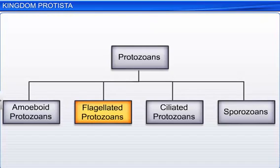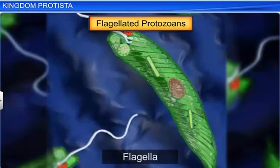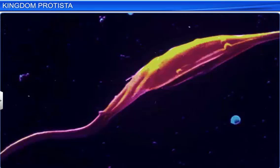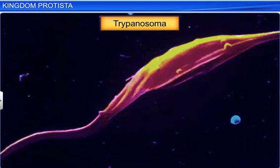Flagellated protozoans, as the name suggests, have flagella. They can be either free living or parasitic. Some parasites, like Trypanosoma, can also cause diseases like sleeping sickness.